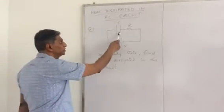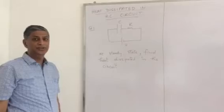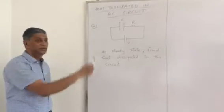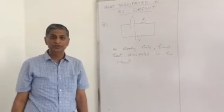First question: there is a C and R connected to the battery. The task is to find total heat dissipated during the charging of the circuit.